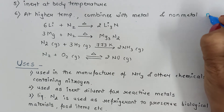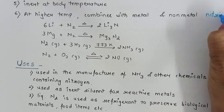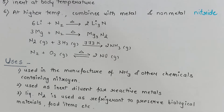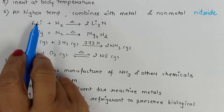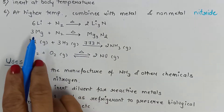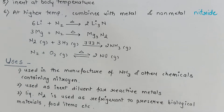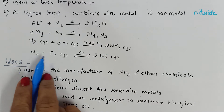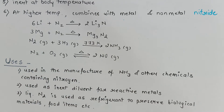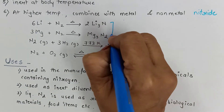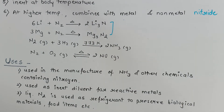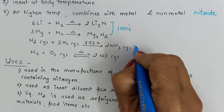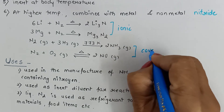For example, on reacting with lithium it forms lithium nitride, and with magnesium it forms magnesium nitride. On reacting with hydrogen it forms ammonia, and on reacting with oxygen it forms nitric oxide. Metal nitrides are ionic in nature, whereas non-metal nitrides are covalent in nature.